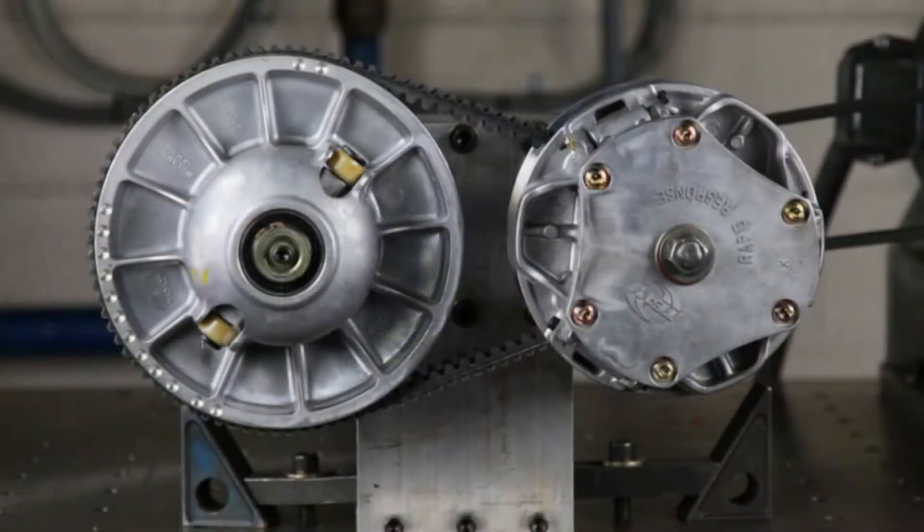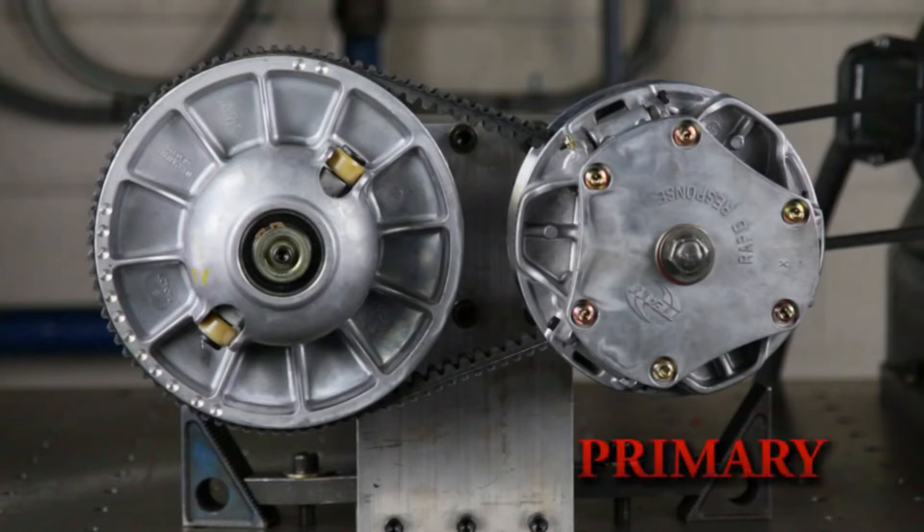A CVT system consists of three principal components: a primary clutch, a secondary clutch, and a belt.